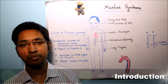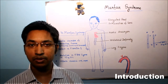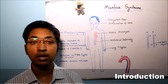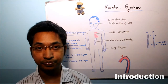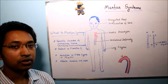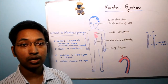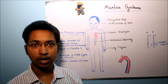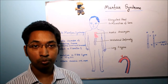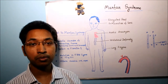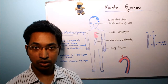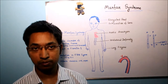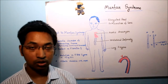First question: what do we mean by Marfan syndrome? Before talking about the definition, I would like to mention some facts that will help us understand it. The first thing to remember is that Marfan syndrome is a genetic disorder of connective tissue. Connective tissue holds all the cells, tissues, and organs of our body together. Its major components include elastic fibers, collagen fibers, ground substance, and cells. Connective tissue also has important roles in the growth and development of our body.